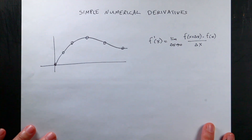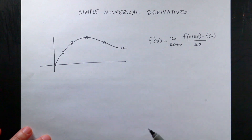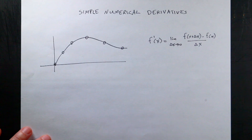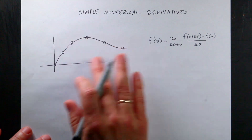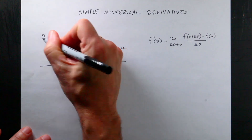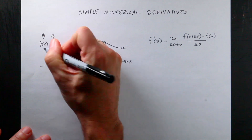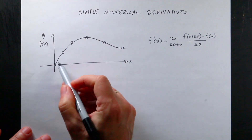Let's take a numerical derivative. What is a numerical derivative? I assume that you have an idea about what a derivative is. But imagine that instead of a function, I have data. I just have these data points right here. So this is y and x, or you can say this is f of x. These are data points.